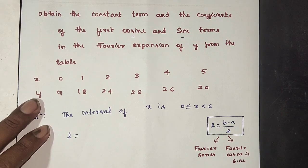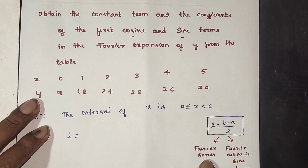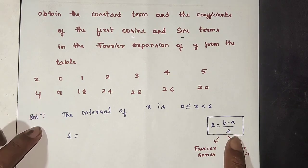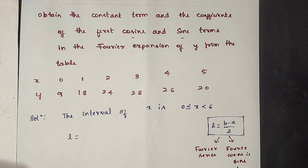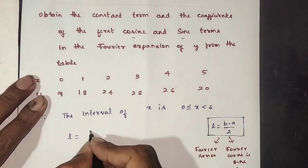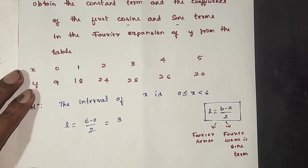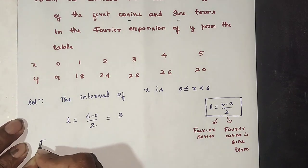The Fourier cosine and sine terms — this is the formula. Fourier cosine series, half-range Fourier sine series — the Fourier sine and cosine terms. L is equal to (6 minus 0) divided by 2, so L is equal to 3.